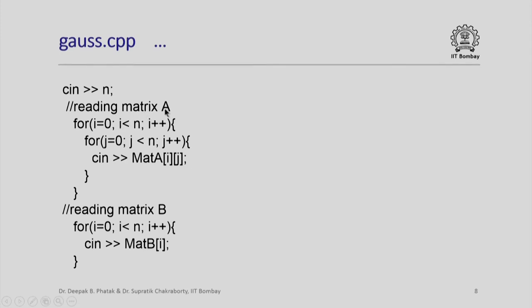We read the matrix A. For simplicity, I have avoided including statements which will validate the input but the program which will upload on the site will have all those things. Then I will read the matrix B, this completes the input statement. Note again that our standard for loop that we use will have i equal to 0, i less than n, i plus plus kind of standard structure because this varies from 0 to n minus 1.